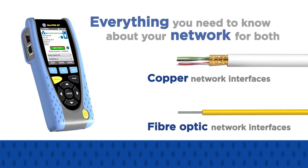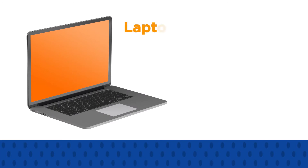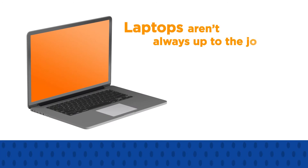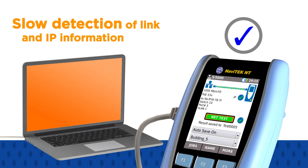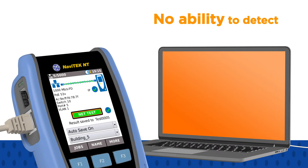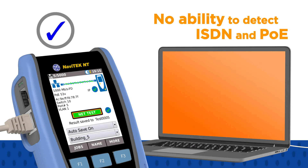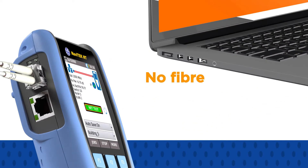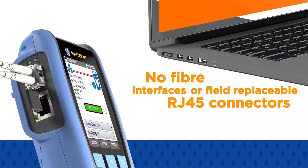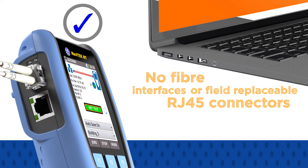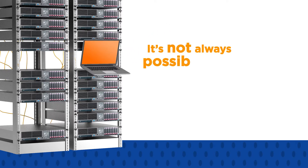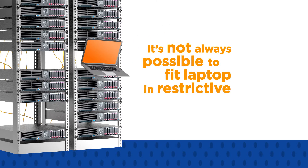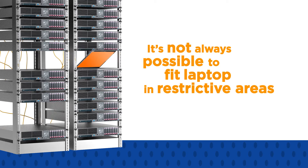For many of us, it's tempting to turn to a laptop or a software tool for network troubleshooting. But laptops aren't always up to the job, with slow detection of link and IP information, no ability to detect services like ISDN and power over Ethernet, and no fiber interfaces or field-replaceable RJ45 connectors. There's a practical issue too, because it's not always possible to fit your 17-inch laptop into the small, restricted areas where you'll find important cabling.